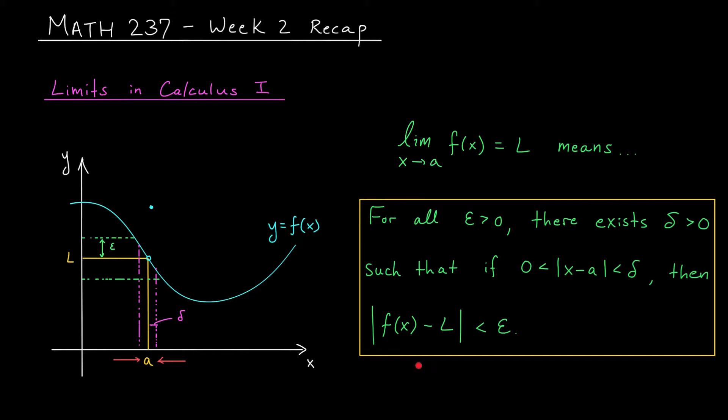Now in Calc 1, you probably saw how this definition can be used to prove some theoretical properties about limits, such as our usual limit laws, or the fact that the limit is unique when it exists. The function can't approach two different values as we get close to x equals a. But when evaluating limits in practice, you probably had a whole different set of tools that you used, such as L'Hopital's rule or the squeeze theorem. The same is going to be true in Math 237. We'll use what we know from Calc 1 to motivate our epsilon-delta definition of a limit, and that will be useful theoretically, but we have a different set of techniques for evaluating limits in practice.